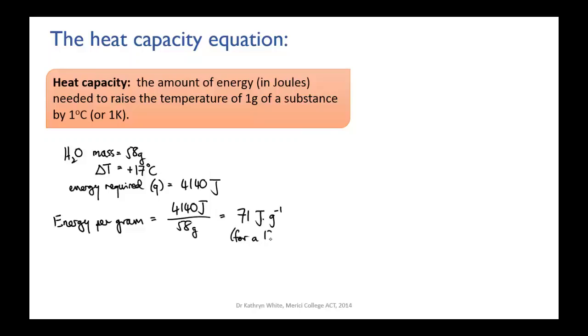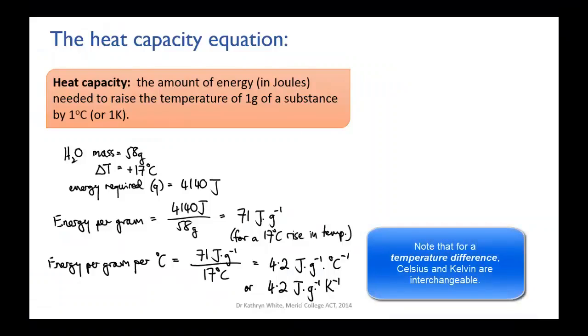OK, but then the temperature rose by 17 degrees Celsius instead of 1 degree Celsius, so we need to divide that value again by 17 to find out how much energy was used for each degree that the temperature rose, and that gives us 4.2 joules per gram per degree Celsius. And that's the heat capacity of water.